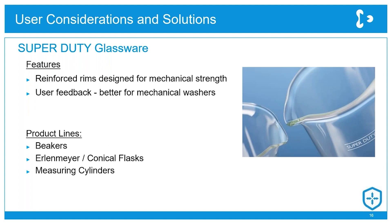We offer some products that assist with lab safety — for example, Super Duty. These products feature a reinforced rim and in some cases reinforced walls, including products like beakers and volumetric ware. We get a lot of feedback from customers that these products can last longer than conventional glassware, especially when frequently used in lab washers, so they can be a more economical choice.